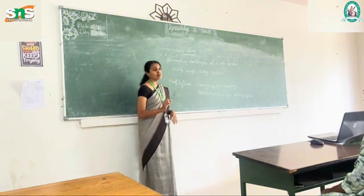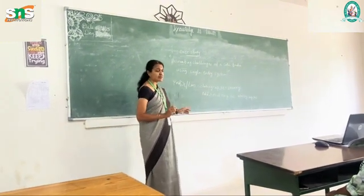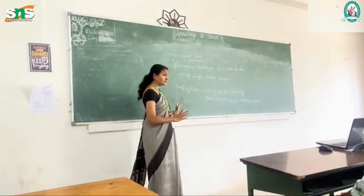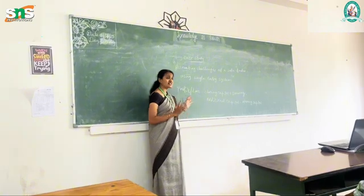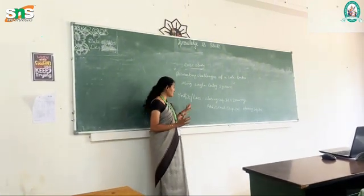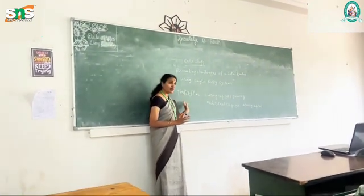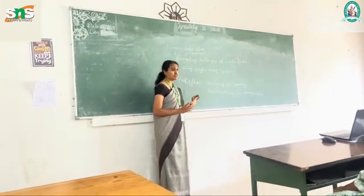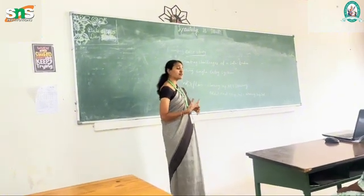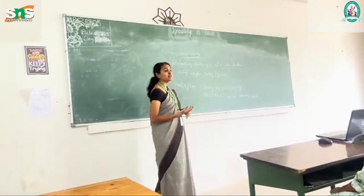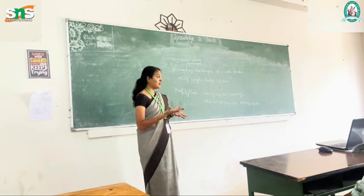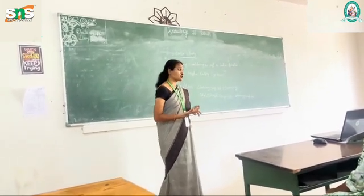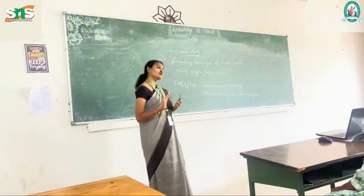Like the double entry system, the single entry system does not provide accurate profit figures. It provides profit or loss as an approximate figure only and will not give accuracy like the double entry system of bookkeeping. With this information, the sole proprietor cannot make sound future decisions, cannot take loans from banks and other financial institutions, and cannot plan for the future.